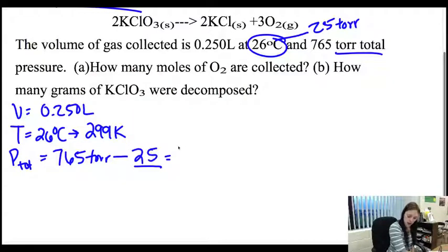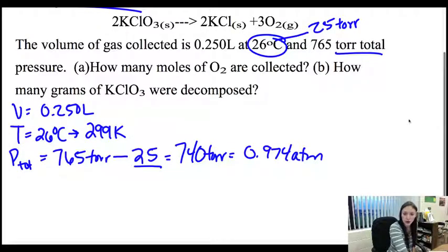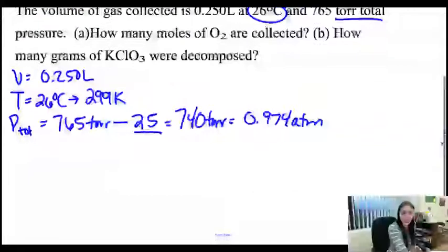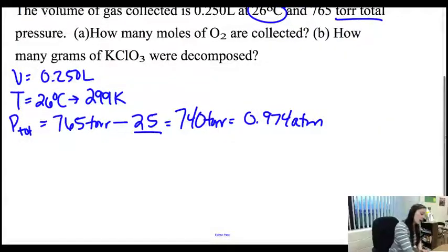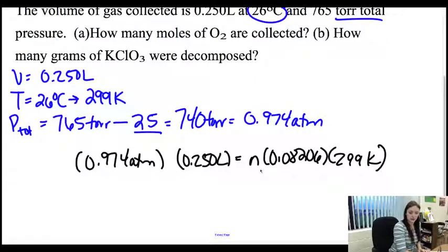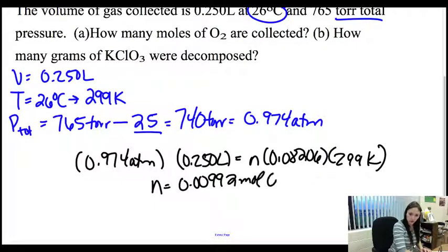So I subtract 25 from that and I'm going to get 740 torr. It's the same thing as 0.974 atmospheres. So if I want to know the moles of O2 collected I've got P, T, and V. I just do PV equals NRT. I now just divide, multiply, and then divide. It's all for your N, and I'm going to have 0.00992 moles of O2.